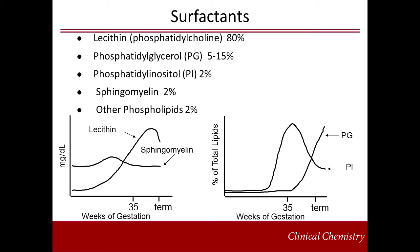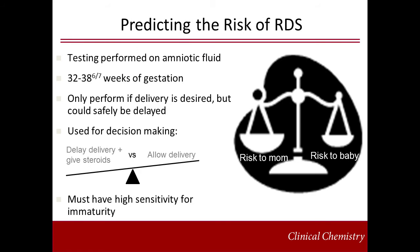Phosphatidylglycerol, commonly abbreviated as PG, accounts for approximately 5 to 15% of the phospholipids present in the surfactant. PG appears in the fetal lung at 36 weeks of gestation and continues to increase until term. Predicting the risk that an infant will have RDS if delivered within 72 hours of when testing is performed can be done by assessing the surfactants present in the amniotic fluid.